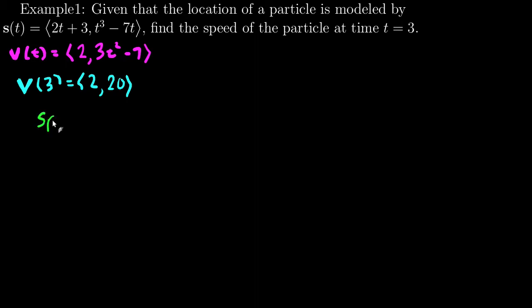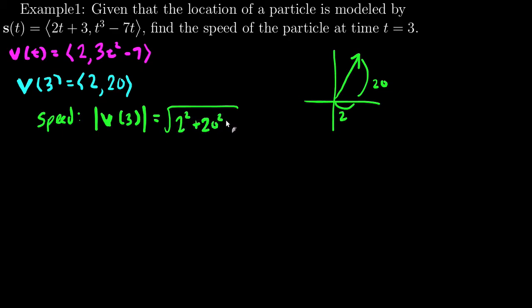And in order to find the speed, I do the magnitude of that vector, which will just be, since I have this vector that goes over 2 and up 20, to find the magnitude or length of this, I do the square root of 2 squared plus 20 squared, which is the square root of 4 plus 400, which is the square root of 404.